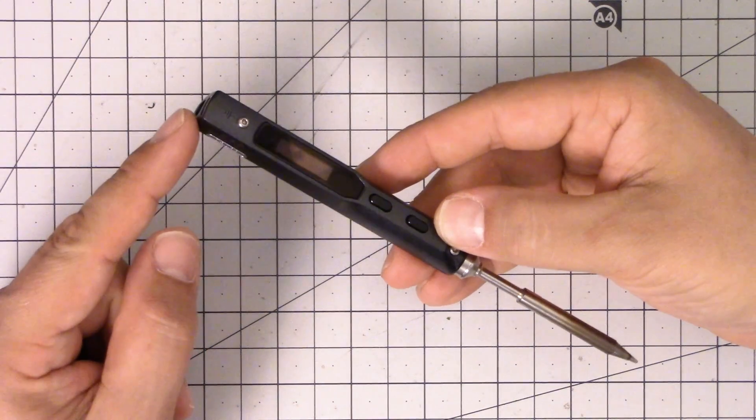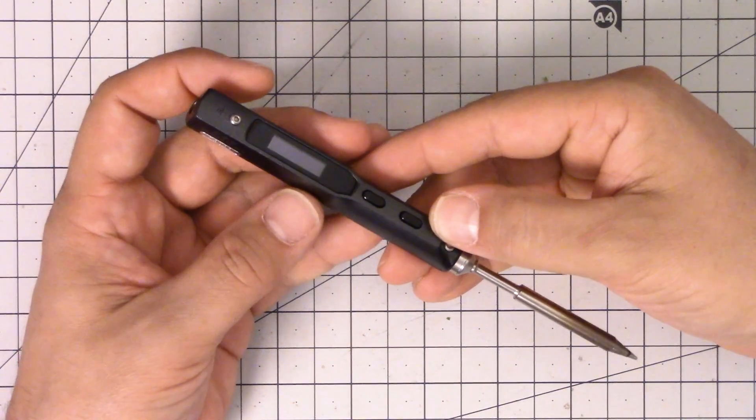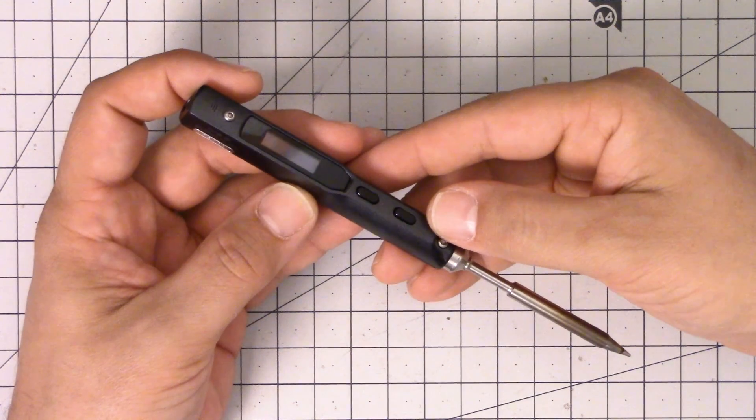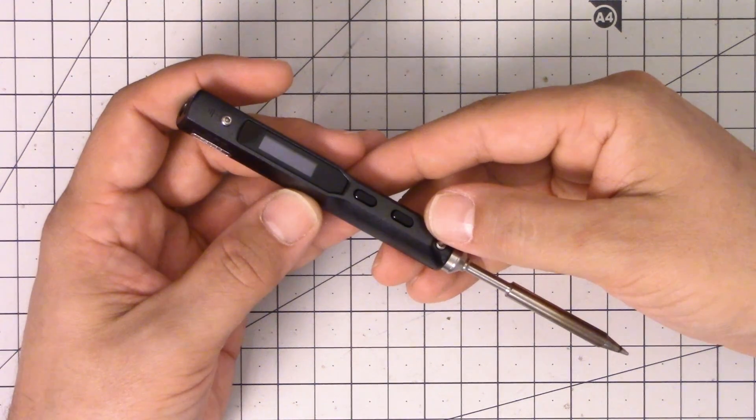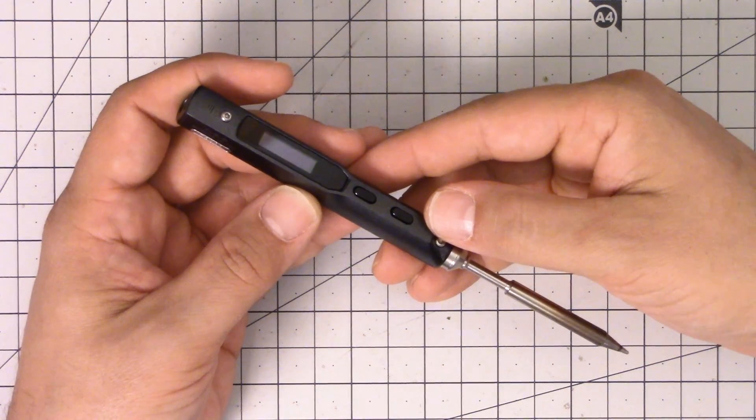Number one, it's electronic. Now you can get butane soldering irons which definitely have some advantages for field use. You don't need a battery, you don't need anything, they just run off of gas. You charge them up and they're ready to go.